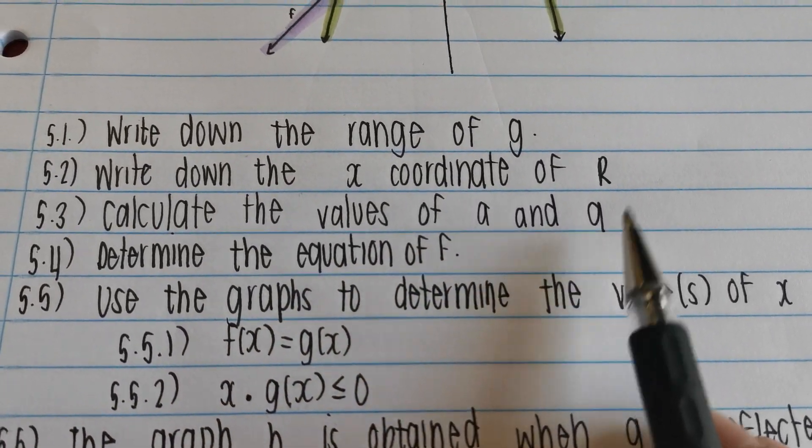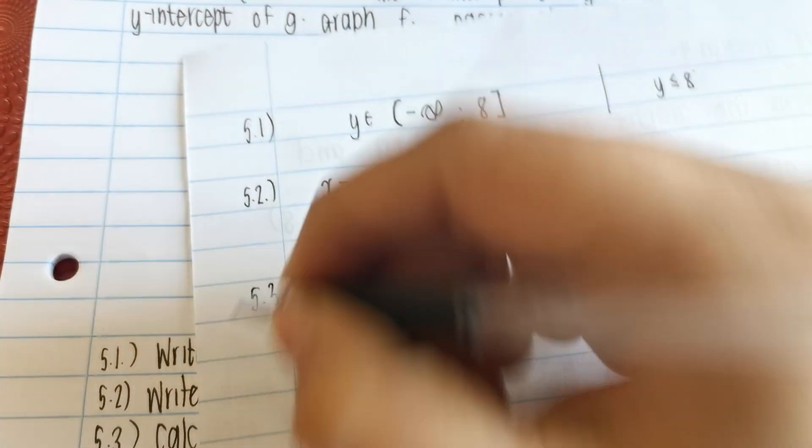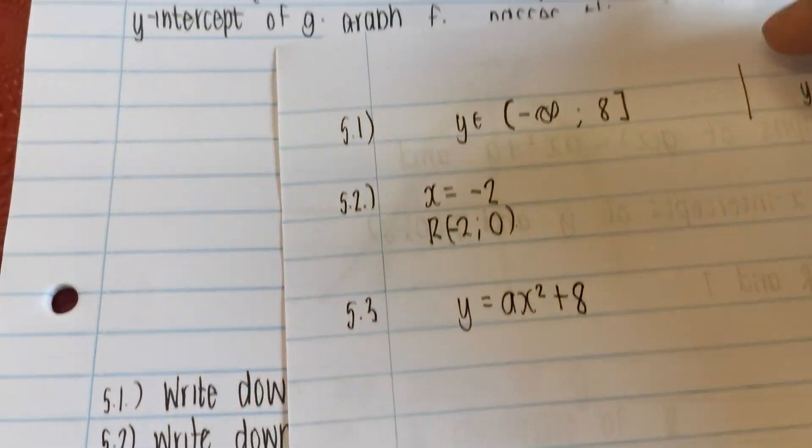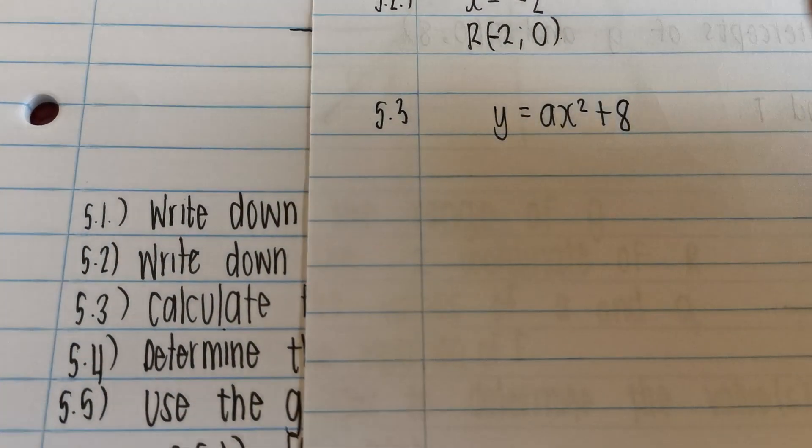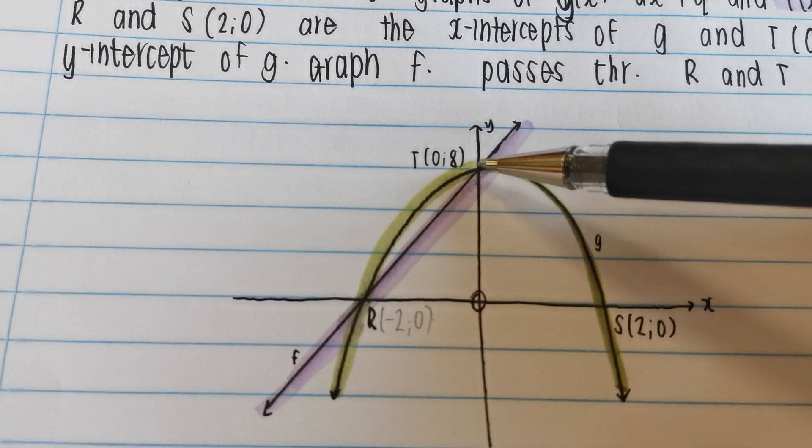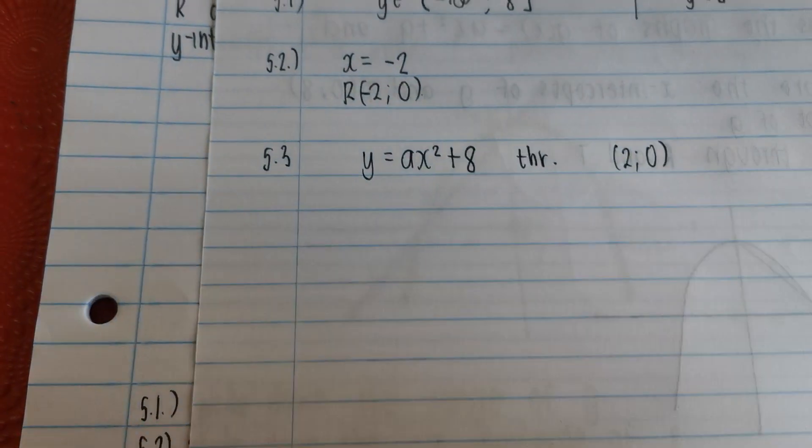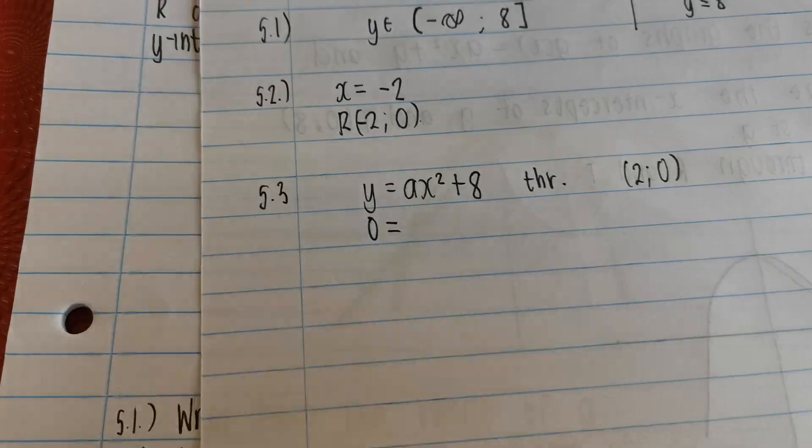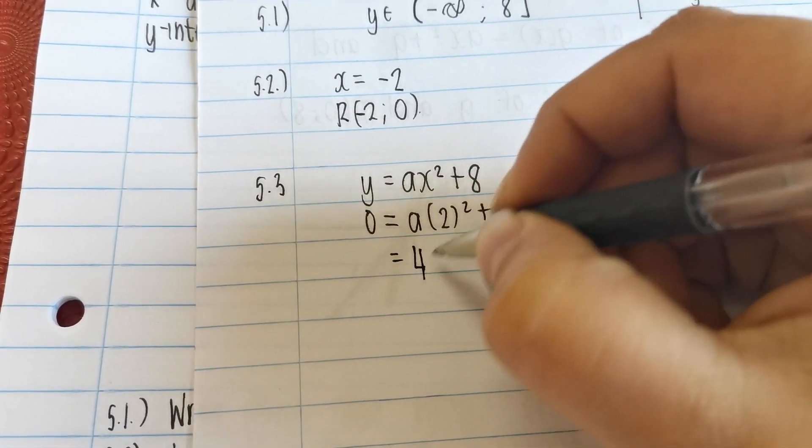Let's continue. It says calculate the values of a and q. Didn't we find the value of q already? We said it was 8. So let's fold that in. 5.3. We're going to say y is equal to ax squared plus 8. Now we need to figure out what the value of a is. In order to do that, we need a point that it passes through. So we're going to say through, and we've got to pick a point that it passes through. Now we already used the 8, so don't use that one again. Use another point. So I'm going to use this point, 2 and 0.